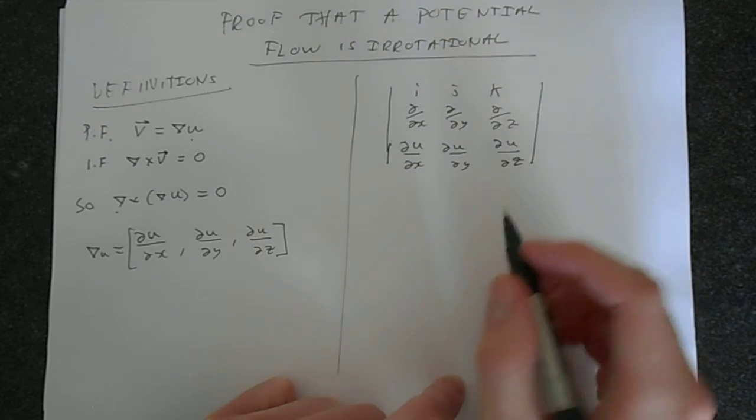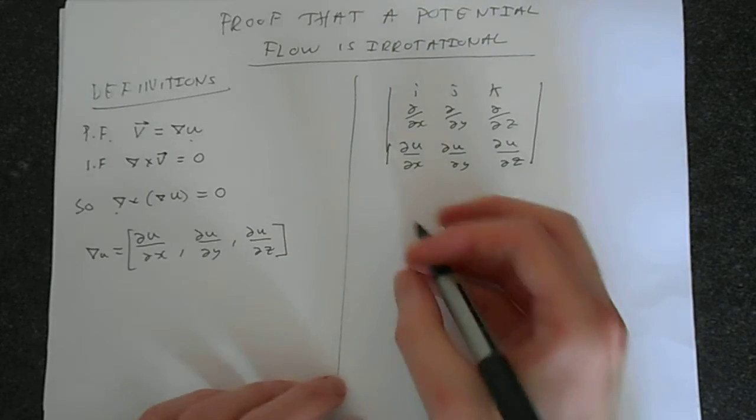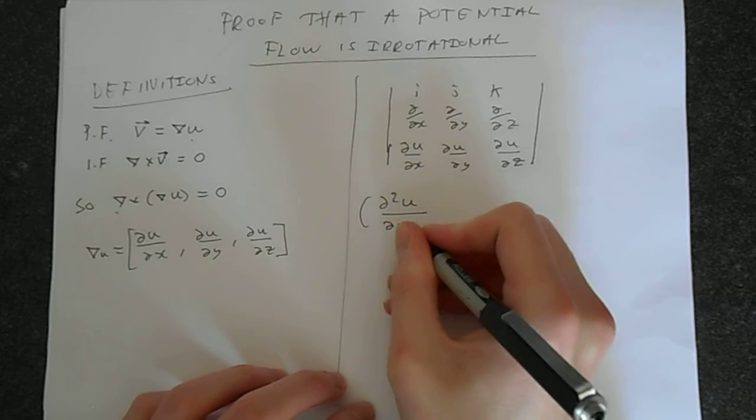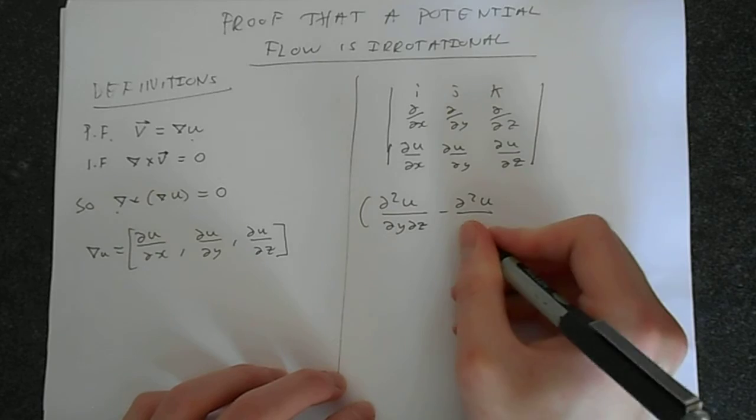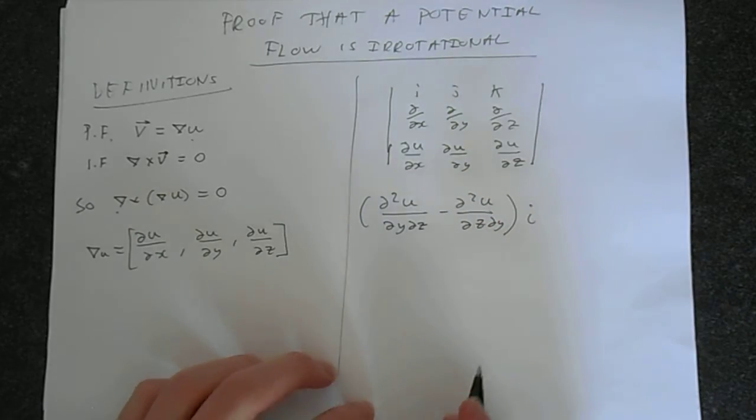Now, if we actually do this cross product, we're going to get, I'll just write the first one out, del squared u delta y delta z, minus del squared u delta z delta y in i. And here's how I do this.